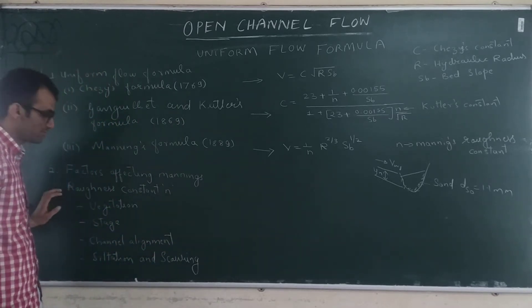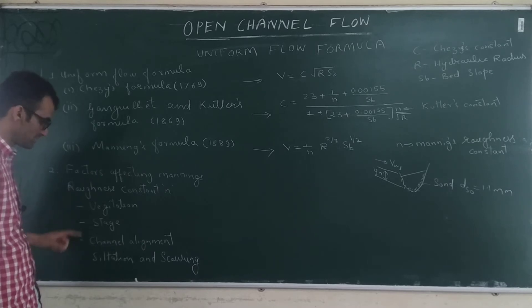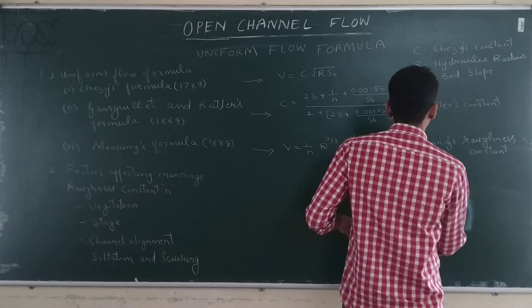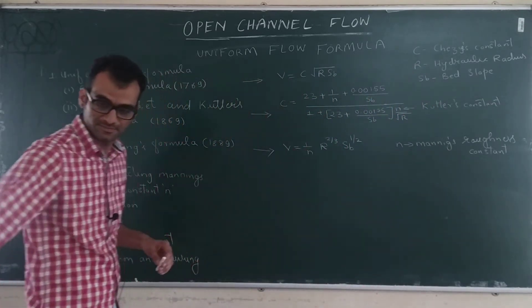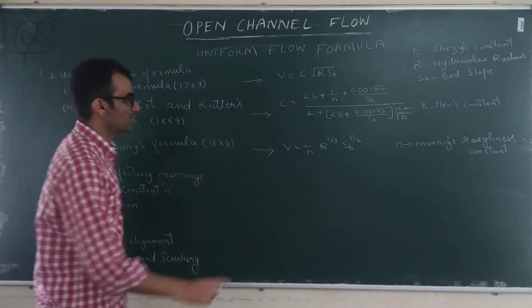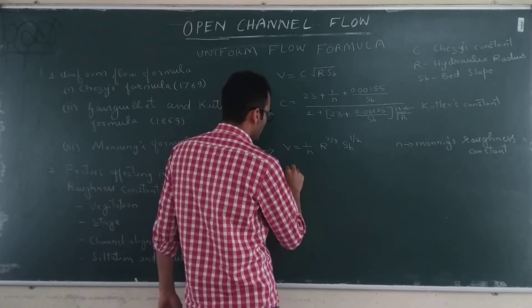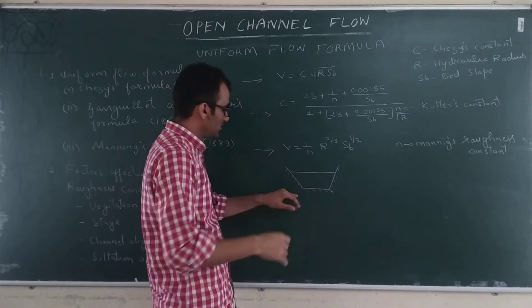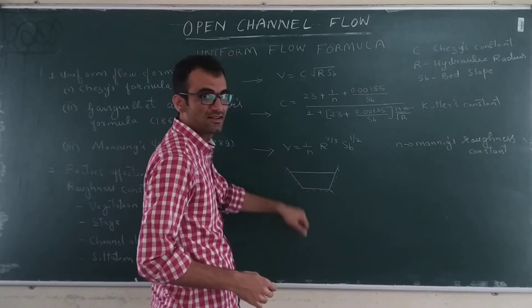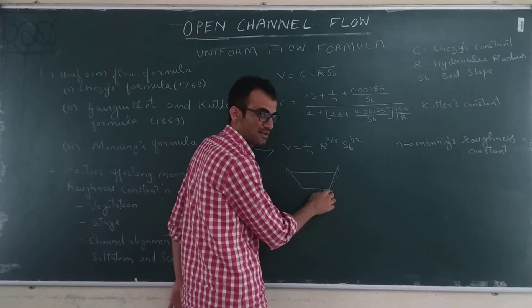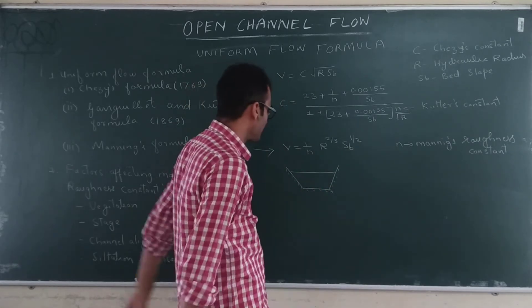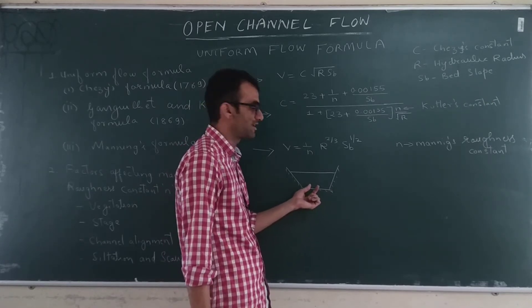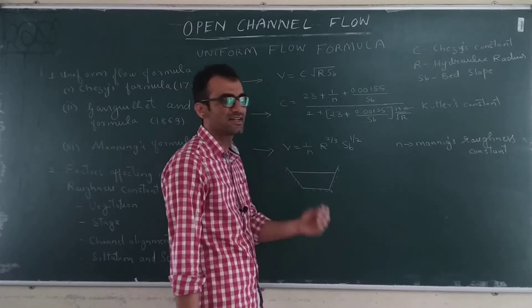Manning's roughness constant depends upon various factors — four important ones. The first factor is vegetation. For a prismatic channel like an irrigation canal lined with cement concrete, there is very little vegetation growing inside, so vegetation is not a significant factor. But in a natural river, you will find some natural vegetation at the bottom of the channel.